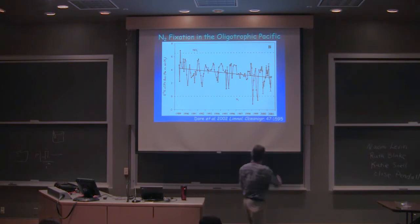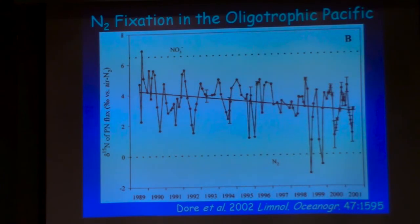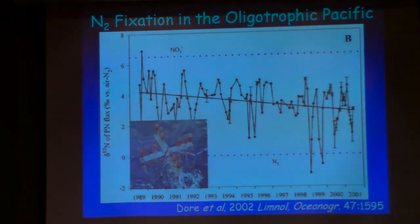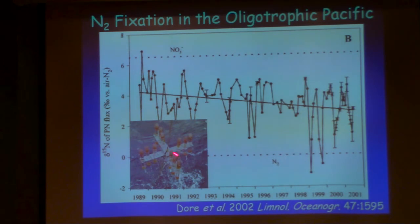Let's look at a couple of examples. This is work by John Doerr at Station Aloha, showing the delta 15N value of particulate nitrogen flux. Particulate nitrogen flux is the material falling through the ocean caught in sediment traps — a tube closed at the bottom, open at the top, with a saline solution so things don't slosh out. Particles fall in, settle to the bottom, and you can filter the water and measure the delta 15N value. At Station Aloha, we see a seasonal cycle of N2 fixation.